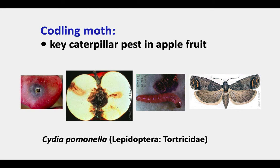Codling moth is the key caterpillar pest in apple fruits and has been for a hundred years. Its classic damage is a hole in the side of the apple. If you cut into the apple, you'll see tunnels that are chewed by the worms, with the worm itself often found in the core of the apple.